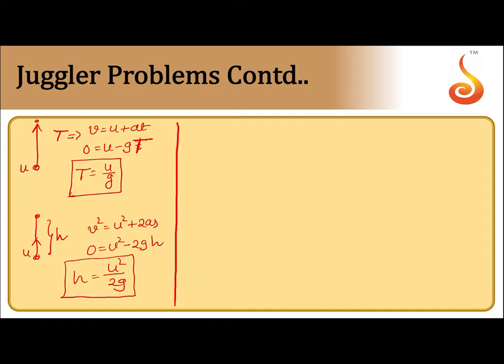Many times we are not given the speed directly. Instead, we are told that he launches n balls per second and the p-th ball is launched when the first ball is at the highest position. If he launches n balls per second, then the time between each successive ball is 1/n. Let us call this equation 1.